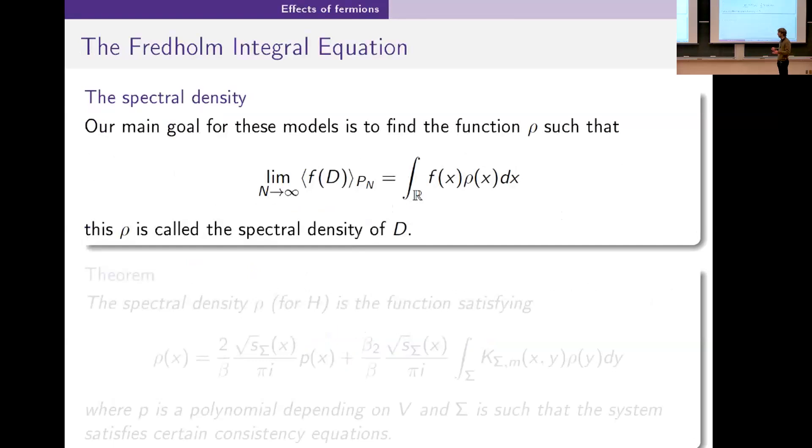Our main goal throughout this whole story is for these random Dirac models, we want to find what we call the spectral density. That is a function ρ so that we can compute large N limits of observables by just integrating our functions along that density.